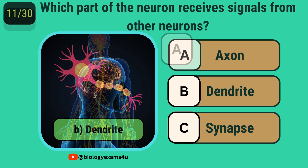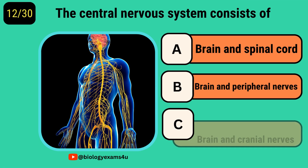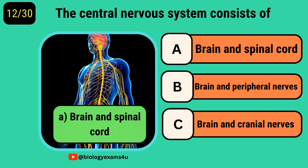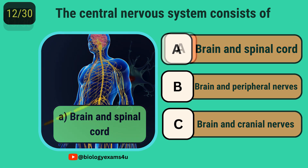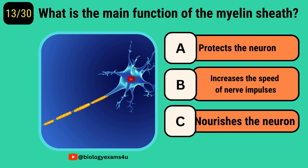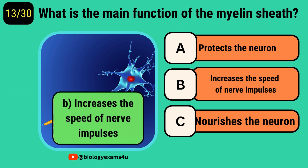The central nervous system consists of? Brain and spinal cord. What is the main function of the myelin sheath? Increases the speed of nerve impulses.